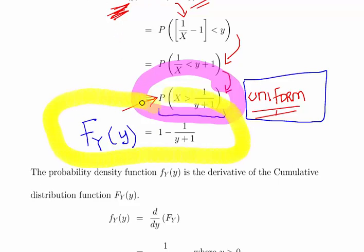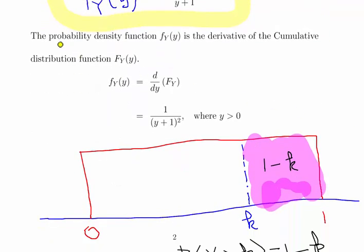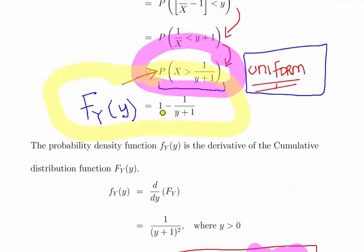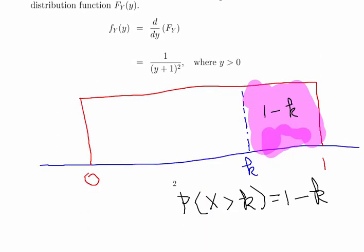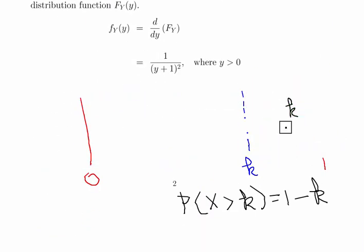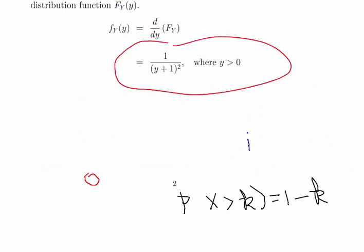We have this expression here and essentially we're nearly home now. The probability density function lowercase f of y is the derivative of the cumulative distribution. So essentially what we do is differentiate that. So differentiate 1 minus 1 over y plus 1. Just a straightforward derivative.